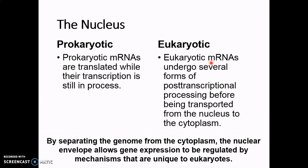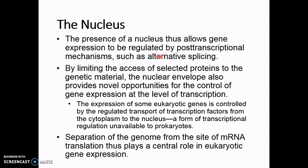For example, we have alternative splicing. With alternative splicing, we can take a single gene, transcribe it, and then process that messenger RNA in one of several different ways, creating one of several different proteins. By putting that all in the nucleus and separating it from the ribosomes, it gives us time to do that. So we can save space and have more proteins produced from a single gene, with different versions that can be produced.